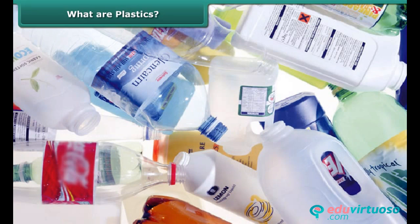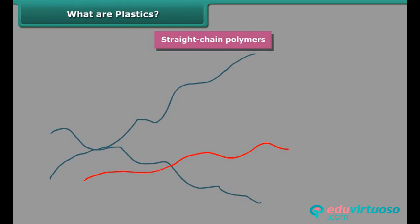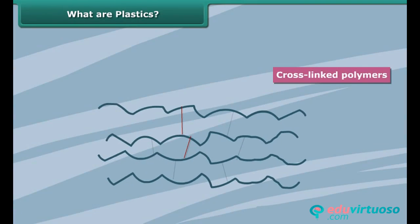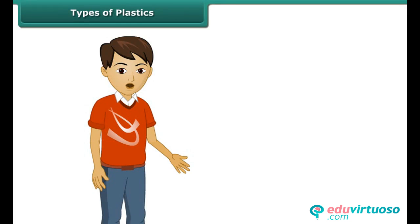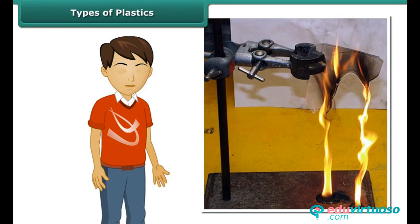Do all the plastics have the same type of arrangement of units? No. Some plastics have a linear arrangement, whereas others are cross-linked. Have you ever observed what happens when a polythene bag is burnt? It melts and you can see its droplets falling off, apart from the noxious smell it produces.